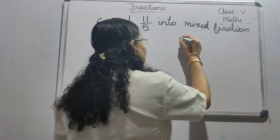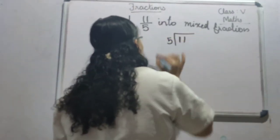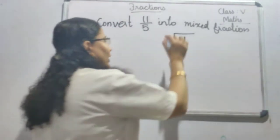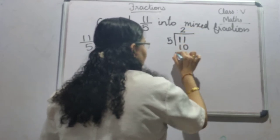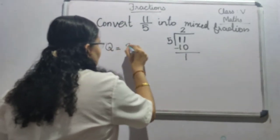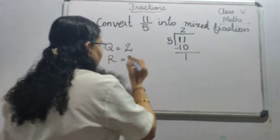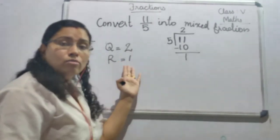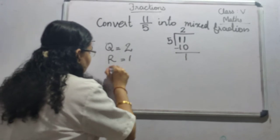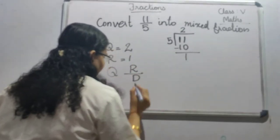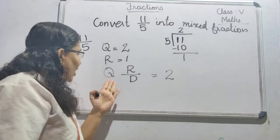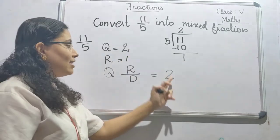So what do you have to do here? You have to divide 11 by 5. When you divide, you will get 2 fives are 10. And when you subtract, you will get 1 as the remainder. So here the quotient is 2 and the remainder is 1. There is a trick for remembering this easily — that is Q, R, D. Q is the quotient, so first write the quotient as the whole number part. Here Q is 2, written as the whole number part.